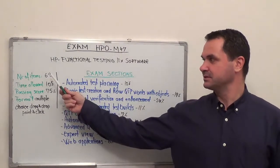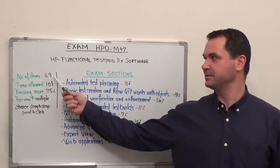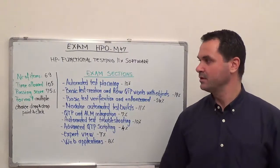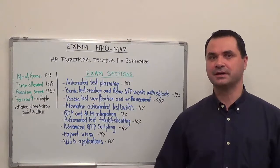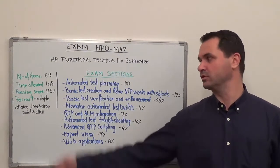Here are the basics of this test. The number of questions or items is going to be 69 with a time allowed of 105 minutes and a minimum required passing score of 75%.